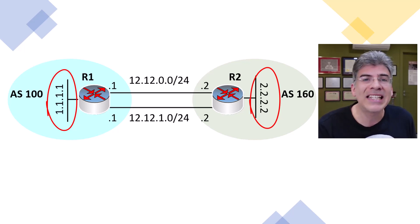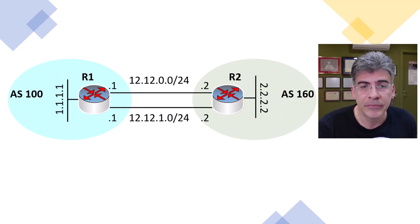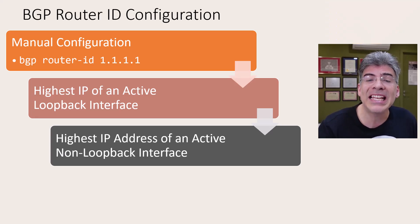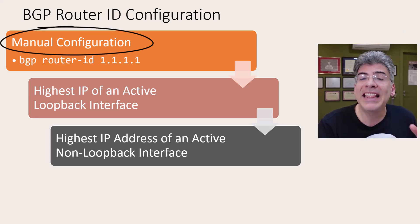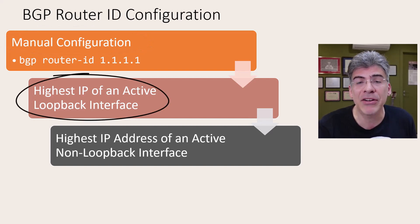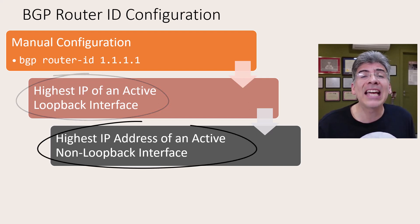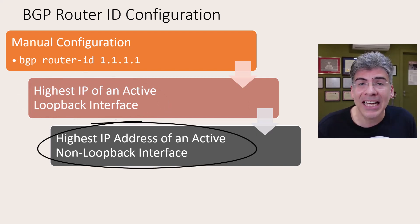The first thing that we'll do is let's see what router ID is being used by each router. How do we determine the router ID? Well, remember, first, if the router ID is manually configured, then that configured value is used. If it's not manually configured, then the highest IP address on an active loopback interface is used. And finally, if there are no loopback interfaces, it's the highest IP address on an active physical interface that's used.